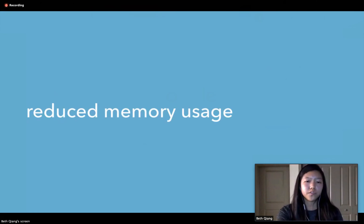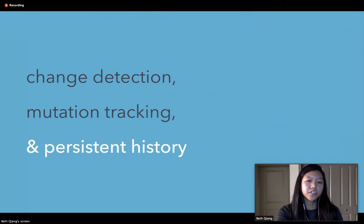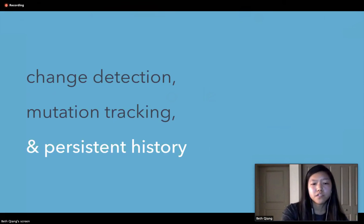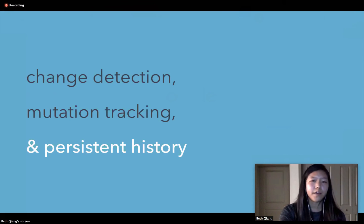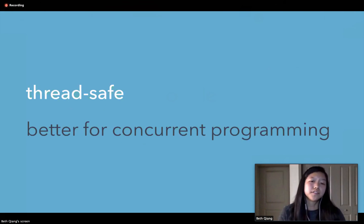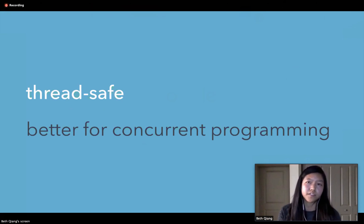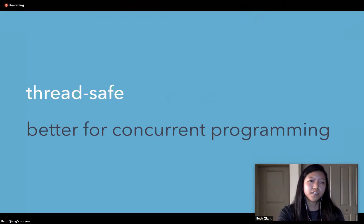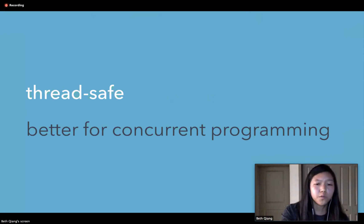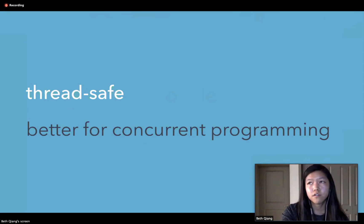Other benefits include reduced memory usage thanks to structural sharing, change detection, mutation tracking, and history. If you want to build an app with undo and redo features, that's almost trivial when using immutable data structures because you have a record of everything that happened. And lastly, while this isn't necessarily applicable to JavaScript, it's worth noting that immutable data structures are thread-safe — having them allows a thread to act on data represented by immutable objects without worrying about what other threads are doing, so you're never changing something without other things knowing about it.